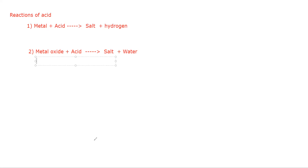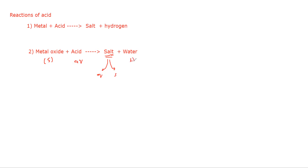What is the state of metal oxide? Metal oxides are solid. What is the state of acid? Acids are aqueous. What is the state of the salt which is formed here? It depends — which salt is formed. You may have an aqueous salt or a solid state salt. If it is a soluble salt, it will be aqueous. If it's an insoluble salt, it will be in solid state. Water is in a liquid state. These are the state symbols.